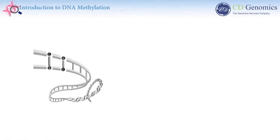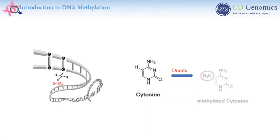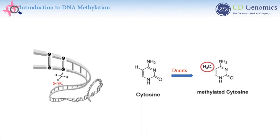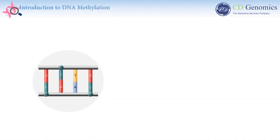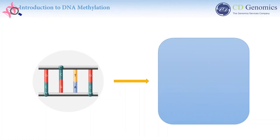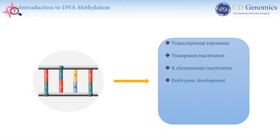DNA methylation, one of the most studied epigenetic modifications, refers to the addition of a methyl group to the fifth carbon of cytosine, catalyzed by DNA methyltransferases, forming 5-methylcytosine. DNA methylation predominantly occurs in CpGs, but is also found in non-CpG contexts. It is heritable and has been associated with multiple cellular processes, including transcriptional repression, transposal inactivation, X chromosome inactivation, embryonic development, genomic imprinting, and the alteration of chromatin structure.